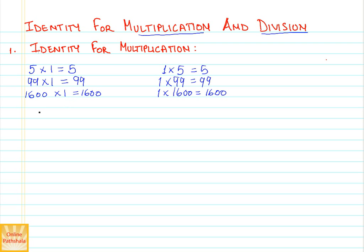Hence, we say that 1 is the identity for multiplication. And let us highlight this. 1 is the identity for multiplication.